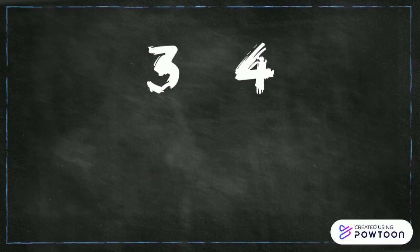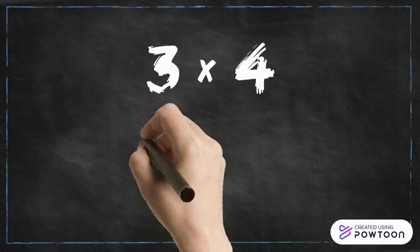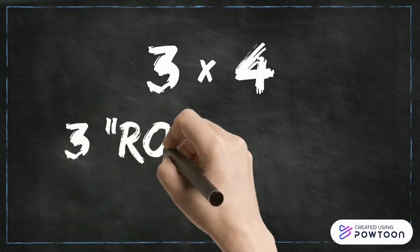The two numbers you will be multiplying are called the factors. This will determine how many rows you make and how many items are in each row. We are going to solve this equation by making three rows of four. Let's solve this equation together.